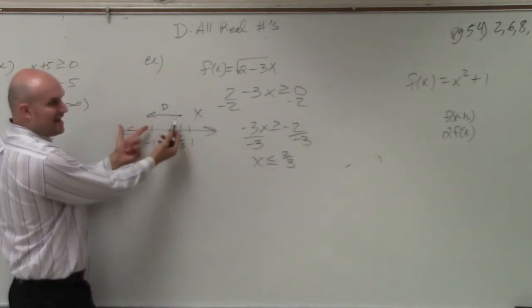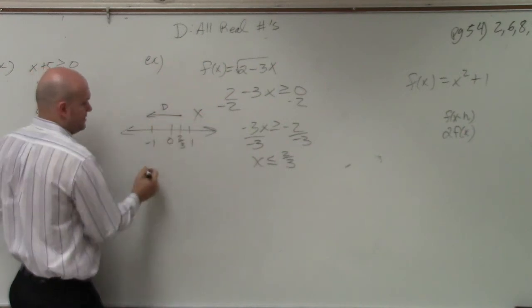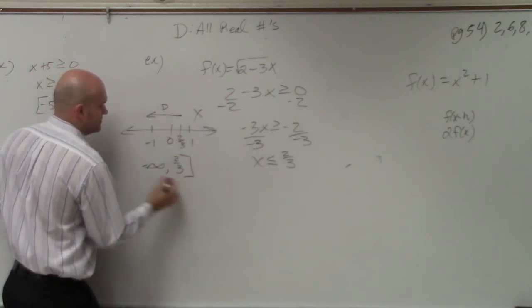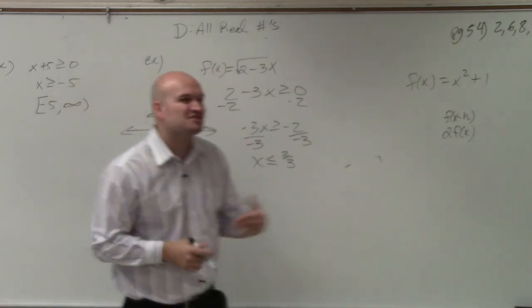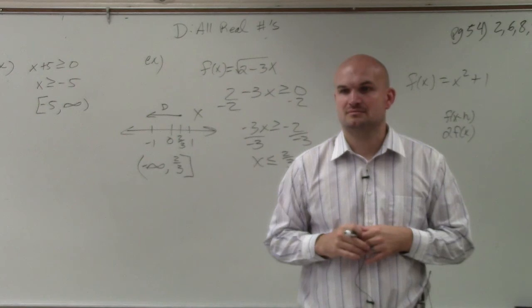So how do I write my domain if it's all the numbers going this way, but stopping at 2 thirds? Well, that's from negative infinity to 2 thirds. So that one switched on us because we flipped the sign.